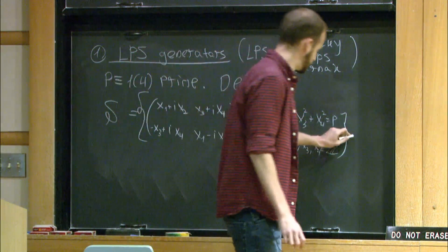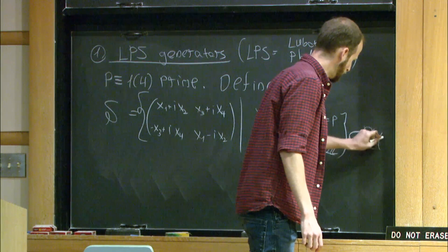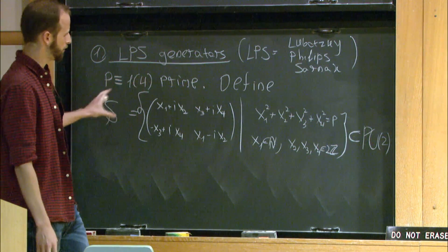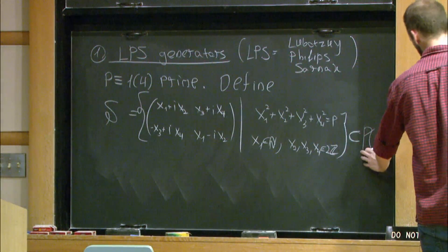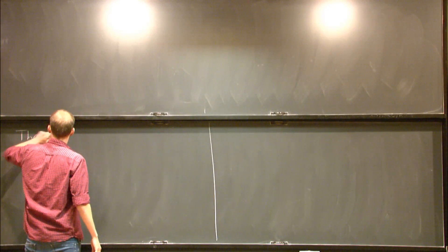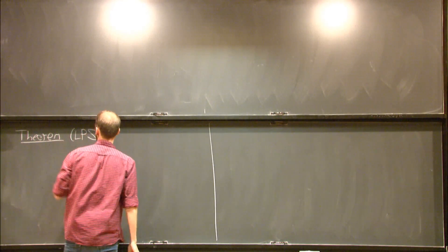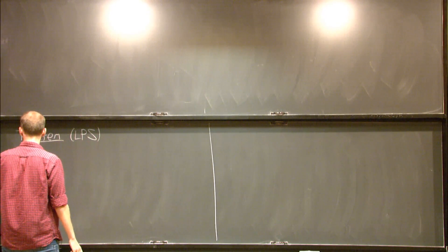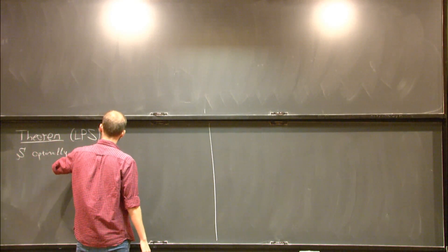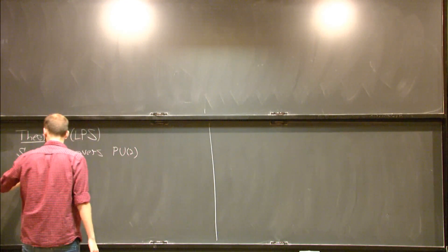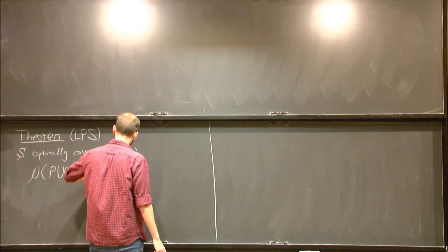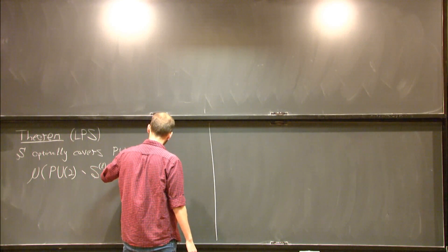This finite set sits inside the compact group PU2 — you need to multiply by the scalar matrix of 1 over square root of P. These are a finite number of matrices inside this compact group, and they satisfy a nice property that I will call S optimally covering PU2. Let me just write the equation and then say it in words, emphasizing how optimal this property is.